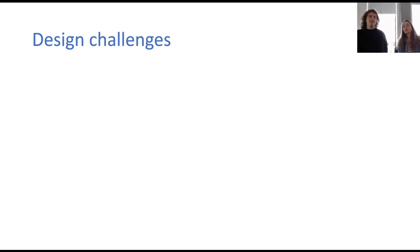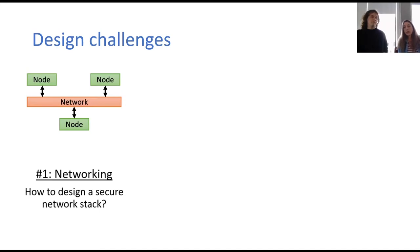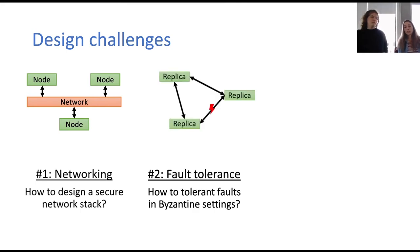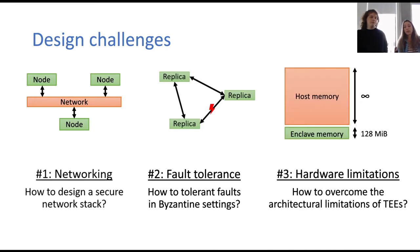When we designed Avocado, we identified three core challenges. The first was how to design a secure replication protocol that ensures integrity, confidentiality, and freshness in adversarial settings while remaining performant. And lastly, as conventional key-value stores should store a large amount of data, Avocado's design should overcome the limitation of enclave memory.